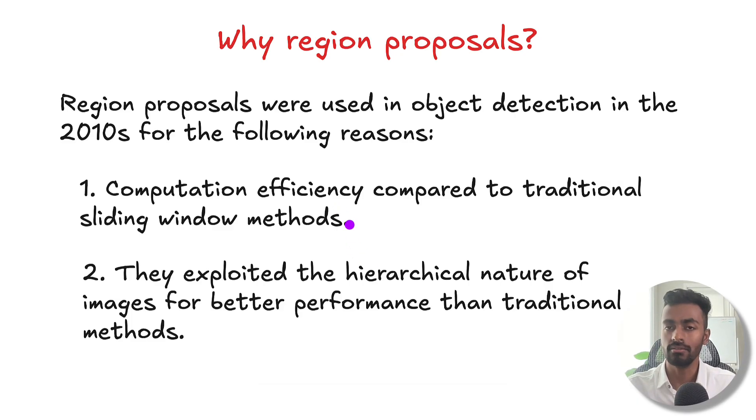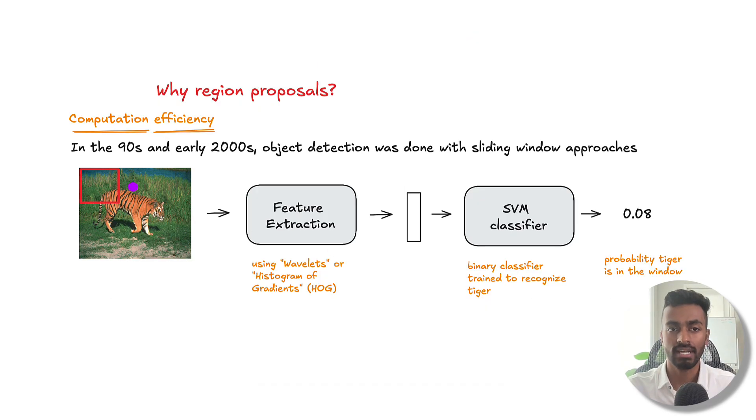Now we're going to discuss both of these in a little bit more detail, starting with computation efficiency. So back in the 90s and early 2000s, object detection was done with sliding window approaches.